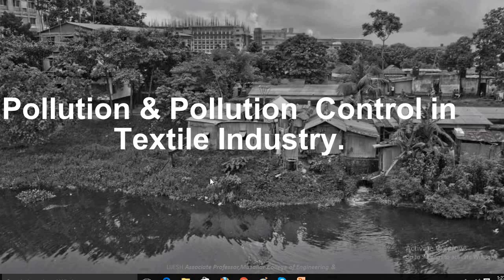Hello dear students. Last class we discussed about pollution in textile industries. Now we will see some of the production mechanisms in textile industries which pollute our environment, and what are the pollution control measures to be adopted in such industries. What do you mean by pollution? Pollution is the contamination of air, water, or soil by substances that are harmful to living organisms.